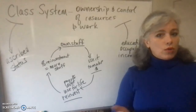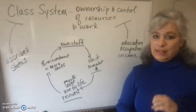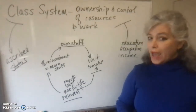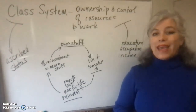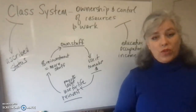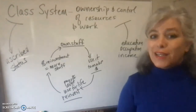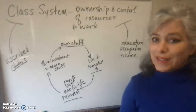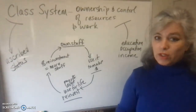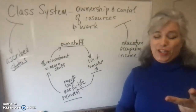In the most recent lecture that you took notes on, we talked about a caste system and how that is based on ascribed statuses. But with a class system such as the one we have in the United States, that's based on achieved statuses — specifically income, occupation, and education.